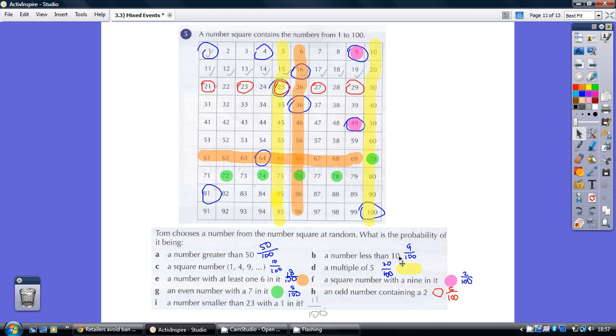Numbers less than 10? There are nine of them. Square numbers? Well, they're the ones I've circled in blue, so there are 10 of those. Multiples of five? Those are the ones I've shaded in that yellowy color, so there are 20 of those.